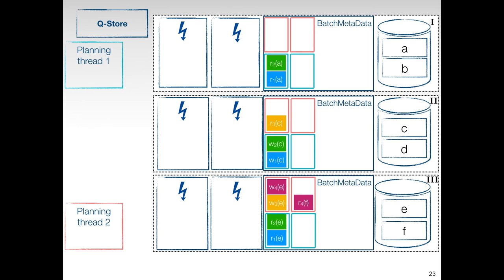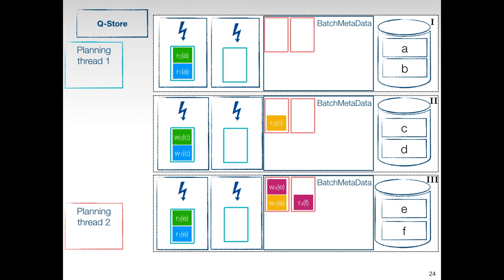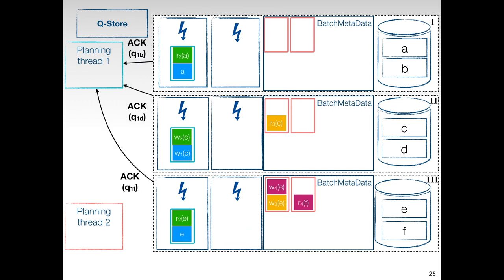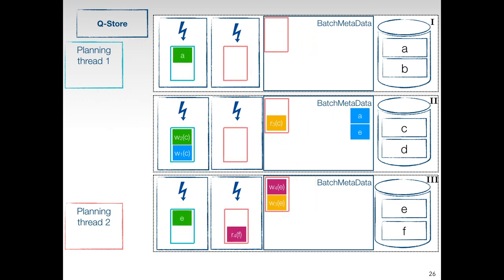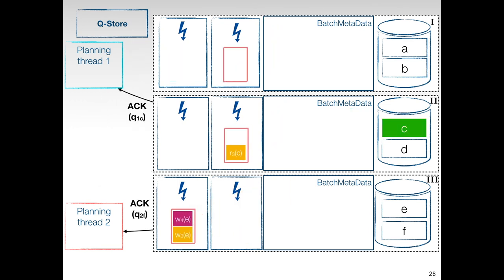Moving to the execution phase, we have two execution threads per node. Execution threads pick higher priority execution queues first to maintain the global execution priority invariant. After completing the execution of a queue, an ACK message is sent to the original planning thread. The write operation on record C requires the values of records A and E. The values of records A and E are received and stored in the batch metadata, so the write operation on record C can proceed. The process continues until all queues are executed with minimal coordination.